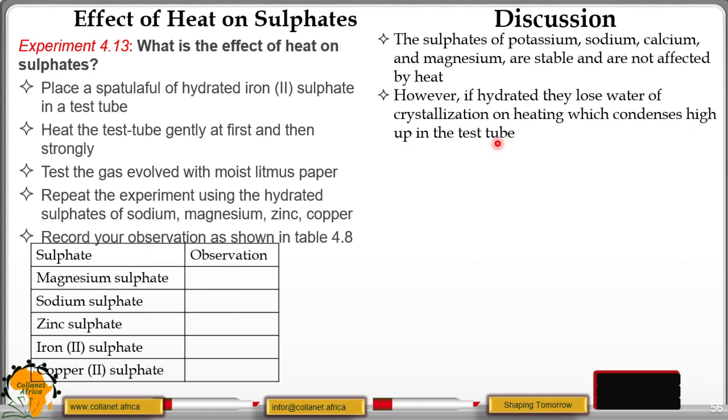So you can use anhydrous copper(II) sulfate to test for that colorless liquid that forms at the upper part of the test tube. If it is water, it turns the white anhydrous copper(II) sulfate to blue, indicating that it is water.